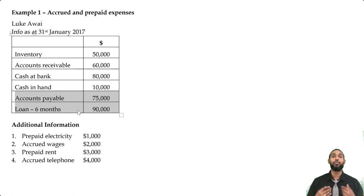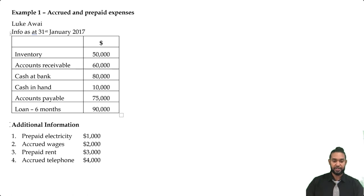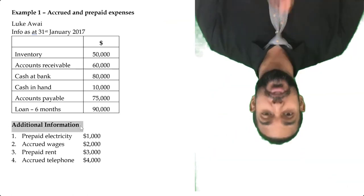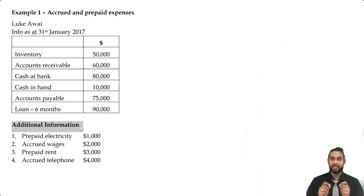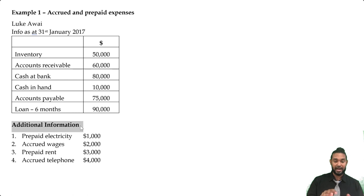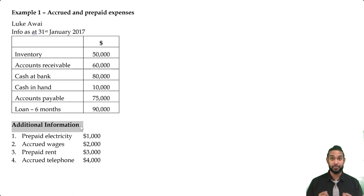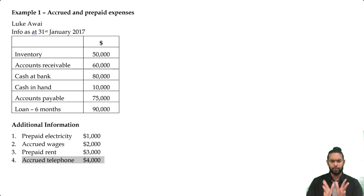Liabilities are amounts we owe to parties other than the owner — we have an obligation to repay those amounts. Below the table we have additional information. Always read your additional information because it gives you extra details needed to properly complete your financial statements, whether to include figures directly or to modify figures from the table. Always read it before you start anything. Here we have prepaid electricity, accrued wages, prepaid rent, and accrued telephone — two prepaid and two accrued expenses.